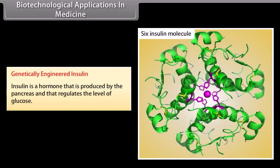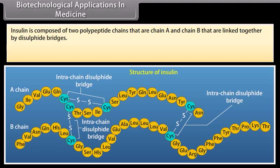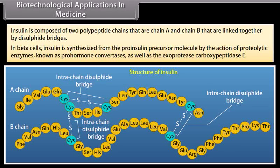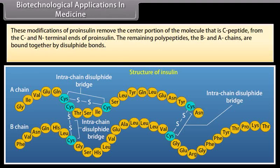Insulin is a hormone produced by the pancreas that regulates the level of glucose. Insulin is composed of two polypeptide chains — chain A and chain B — linked together by disulfide bridges. In beta cells, insulin is synthesized from the pro-insulin precursor molecule by proteolytic enzymes known as pro-hormone convertases and exoprotease carboxypeptidase E. These modifications remove the C-peptide from the C and N-terminal ends of pro-insulin. The remaining B and A chains are bound together by disulfide bonds; the C-peptide is not present in mature insulin.